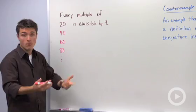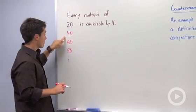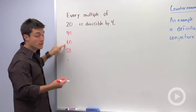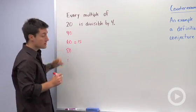And those three dots mean and so on. Well 20 is divisible by 4, 40 is divisible by 4, 60 is divisible by 4, you'd get 15 if you divided by 4, and 80 is divisible by 4.